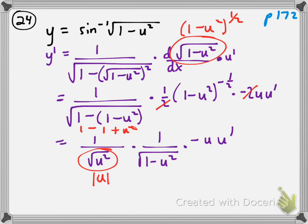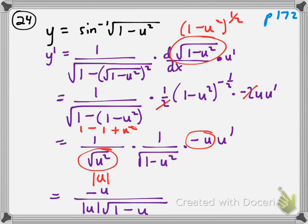We cannot cancel the u's because we're not sure if u is going to be negative or positive. The problem doesn't say that u has to be positive. So we'll just rewrite it: negative u in the numerator, times u prime, over the absolute value of u multiplied by the square root of 1 minus u squared. The solution book didn't have the u prime.